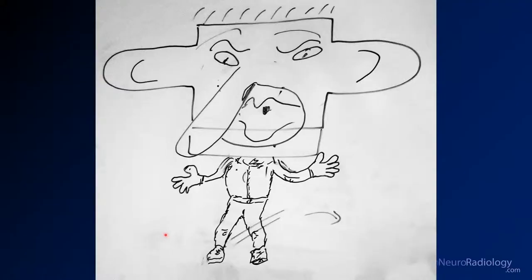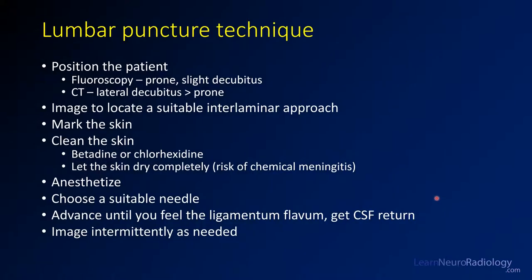This is a picture I drew on a whiteboard — I was trying to draw a lumbar spine with the transverse process and spinous process and the interlaminar space. The residents got creative and turned it into 'lumbar puncture man,' but it shows the general principle of where you're going to go and why you need to put your needle into the interlaminar space. When positioning patients for fluoroscopy-guided lumbar puncture, I do mine with the patient prone and slightly decubitus, rotated about 5 to 15 degrees.